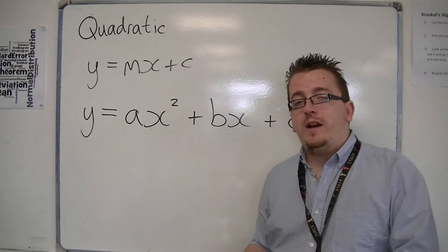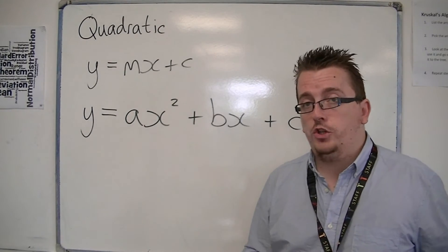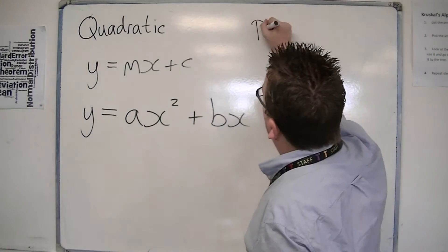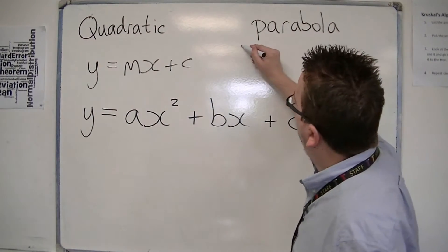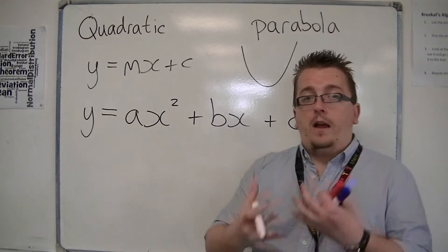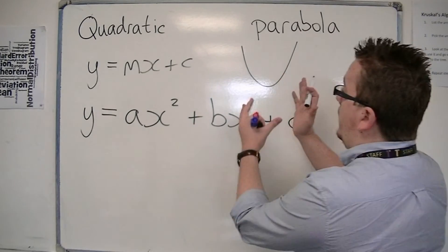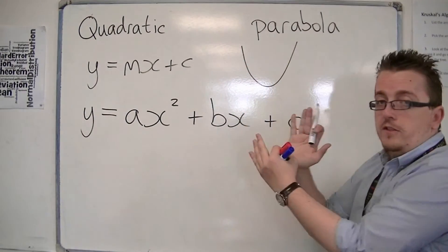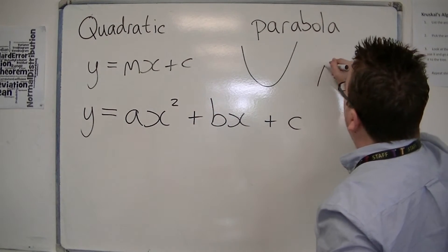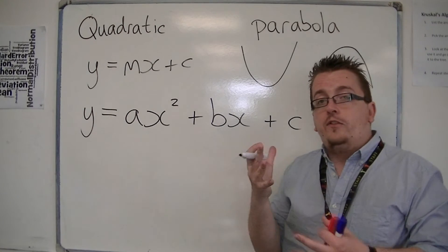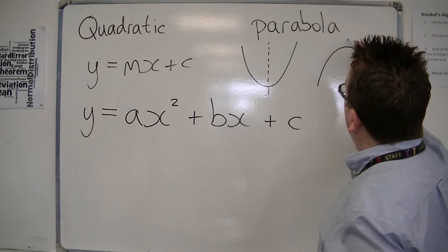Any quadratic curve that you plot or draw will have a particular shape, and that shape is known as a parabola. A parabola looks something like this in that format and shape. It could, depending on the value of a, be tighter — stretched inwards — or it could be stretched outwards. Or it could stretch outwards so far that it goes upside down. These are both parabolas, and they both have a line of symmetry down the middle.